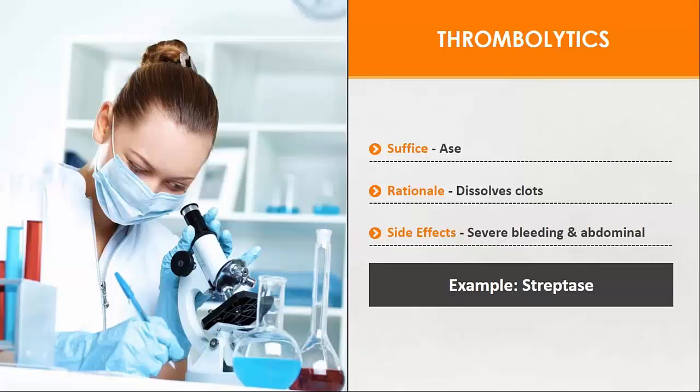An example of where this occurs is somebody who has had a stroke, and there's a window time to when we give this because there's also some severe side effects that can occur. One of them is severe bleeding and abdominal cramps. Anything that it's doing, the side effects are going to be worse if it overdoes that rationale.